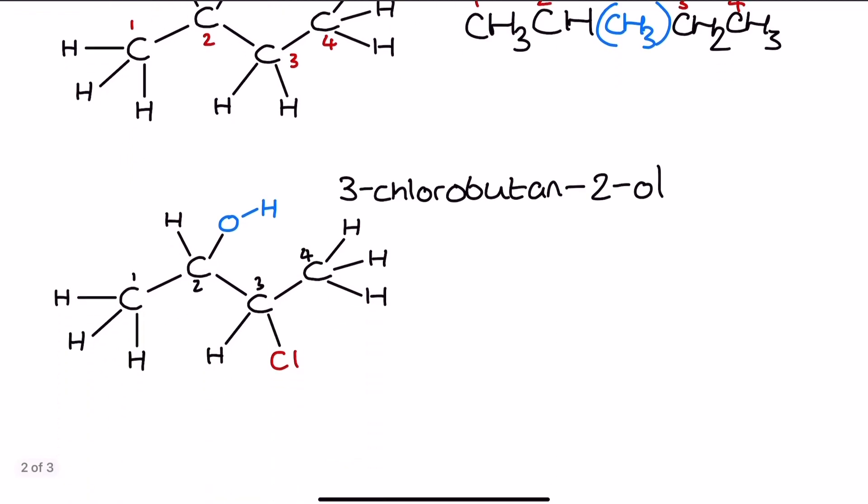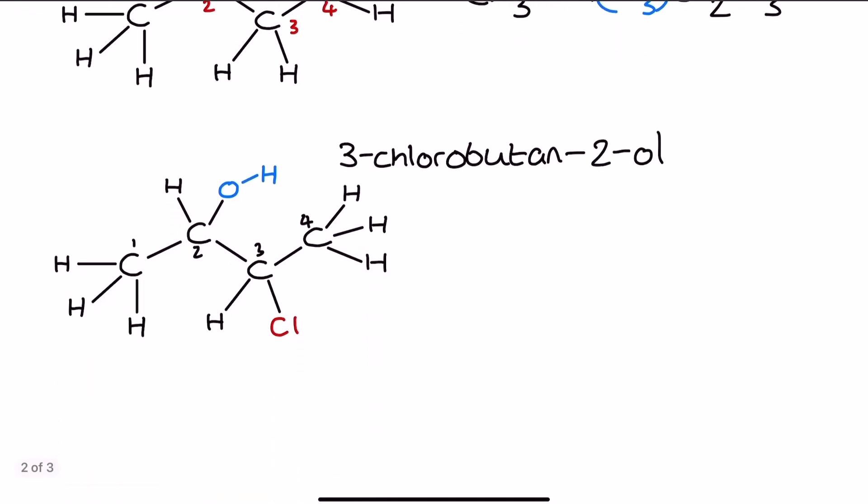What about our next example then? 3-chlorobutan-2-ol. Listing out this one, I've got the numbered sections already here for me, so let's go from left to right. I've got CH3, so that's carbon number 1. I'm just going to use black numbers for this one because I've done the Cl in red.